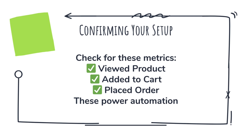To confirm it's working, go to Metrics in Klaviyo and look for key events like Viewed Product, Started Checkout, and Placed Order. This data powers your flows, campaigns, and segmentation — it's like giving Klaviyo a live view into your storefront.